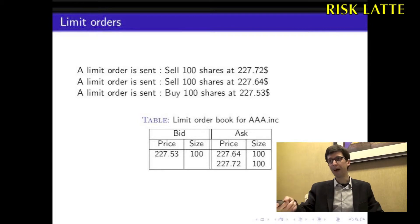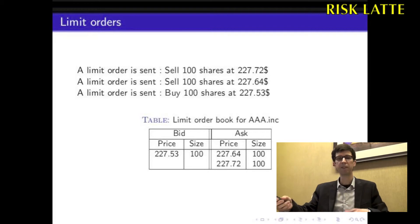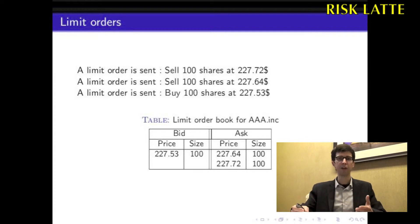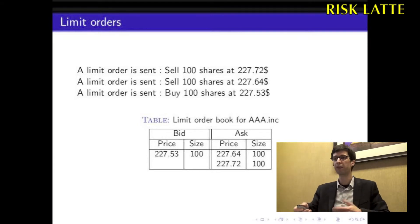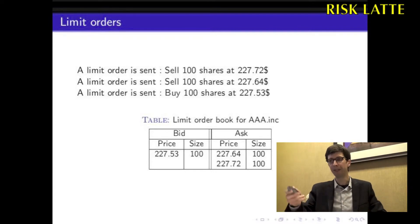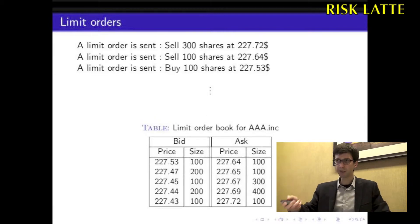Now suppose there is a buy limit order for 100 shares at $227.53. The buy order and the sell order don't match in price, so we cannot execute those orders. The buy order is stored in the bid part of the limit order book, and it goes on filling the limit order book.